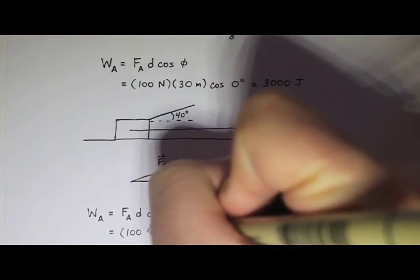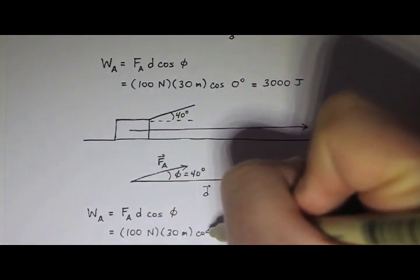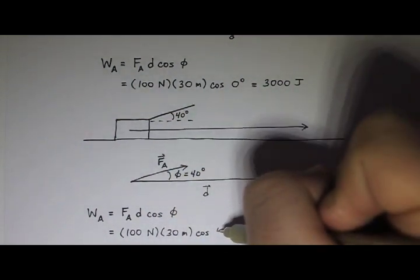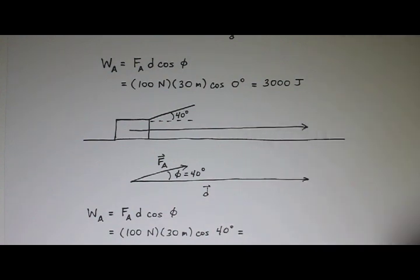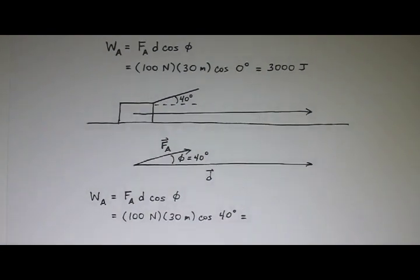This is still 100 newtons, this is still 30 meters, except now our angle has changed. Our angle is 40 degrees. And if you calculate this, it ends up being about 2,300 joules if you round.